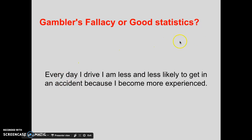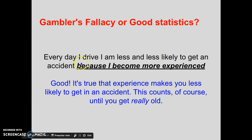So is it the gambler's fallacy or is it just a good understanding of statistics? 'Every day I drive, I am less and less likely to get in an accident because I become more experienced.' This doesn't actually have much to do with statistics — it's an understanding of how practice works. It is true, and it's not the gambler's fallacy, that experience makes you less likely to get in an accident. Notice we had to add in something extra. Just based on driving more and more alone, the statistical quality of being in the car more often does not change your likelihood of getting in an accident. But when we add in the extra variable of becoming more experienced, suddenly it's an okay statement — you're saying 'the more experienced I am, the less likely I am to get in an accident,' and that seems very reasonable.